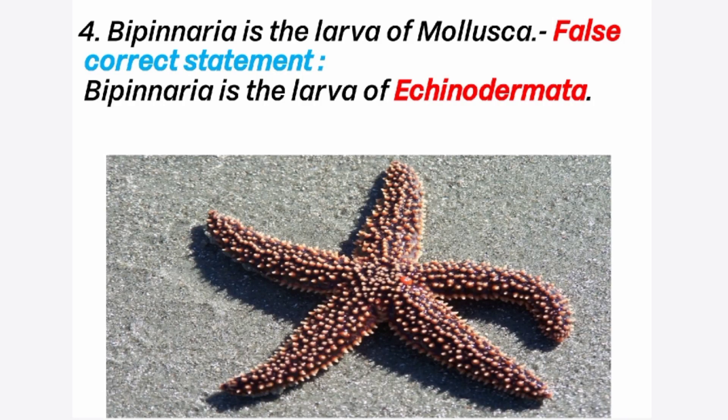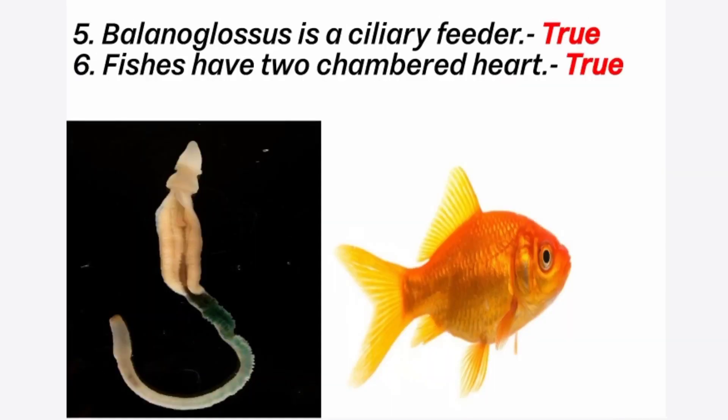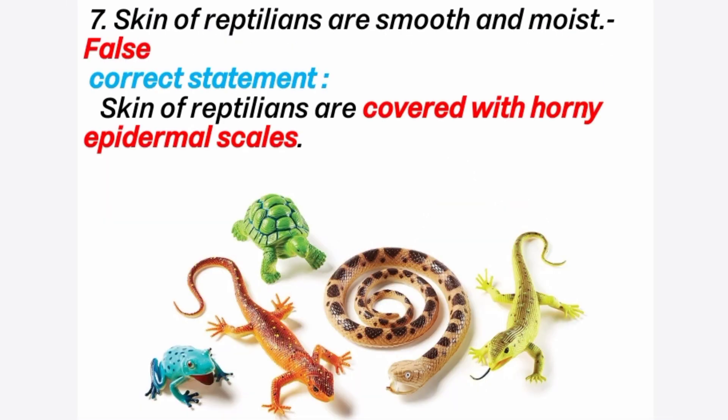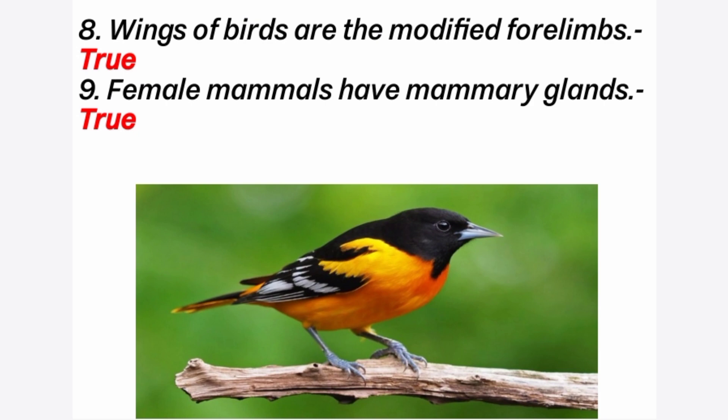The correct statement is Bipinnaria is the larva of Echinodermata. Fifth question: Balanoglossus is a ciliary feeder — answer is true. Sixth question: fishes have a two-chambered heart — answer is true. Seventh question: skin of reptilians is smooth and moist — answer is false; correct statement is skin of reptilians is covered with horny epidermal scales. Eighth question: wings of birds are the modified forelimbs — answer is true.